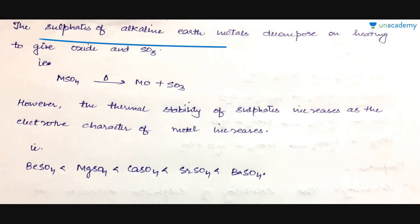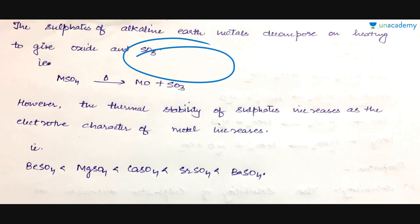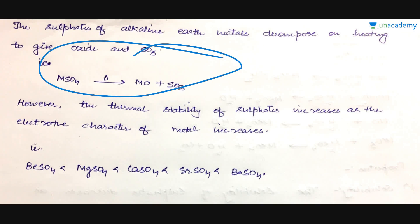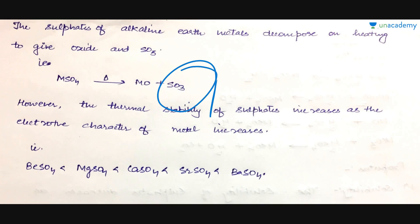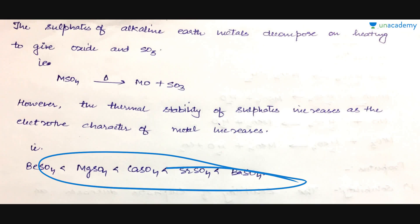The sulfates of alkaline earth metals decompose on heating, giving their oxides and SO3. This is a key difference from alkali metal sulfates — sodium sulfate or potassium sulfate do not decompose easily. The thermal stability of the sulfates increases as the electropositive character of the metal increases, so barium sulfate is comparatively more stable than strontium sulfate, which in turn is more stable than calcium sulfate and magnesium sulfate.